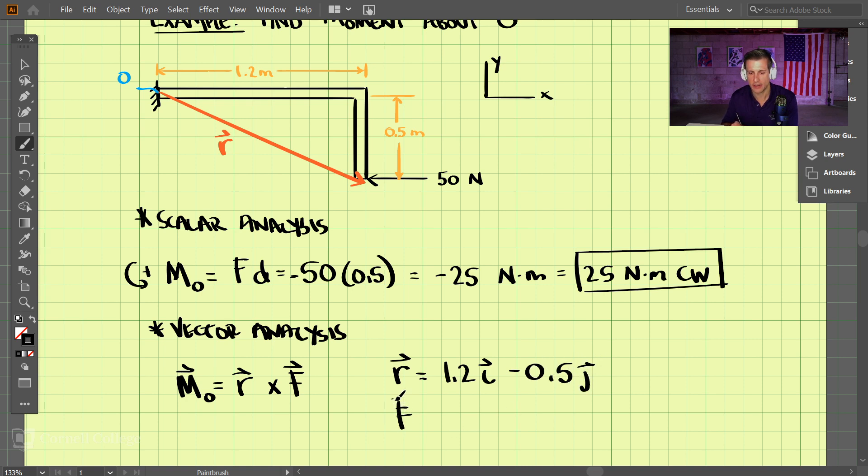Now let's write our force vector. The force vector is pointed directly in the negative X direction, so we have negative 50i plus 0j.